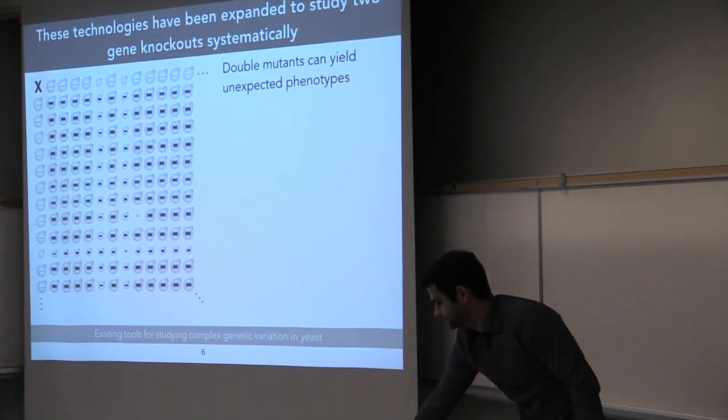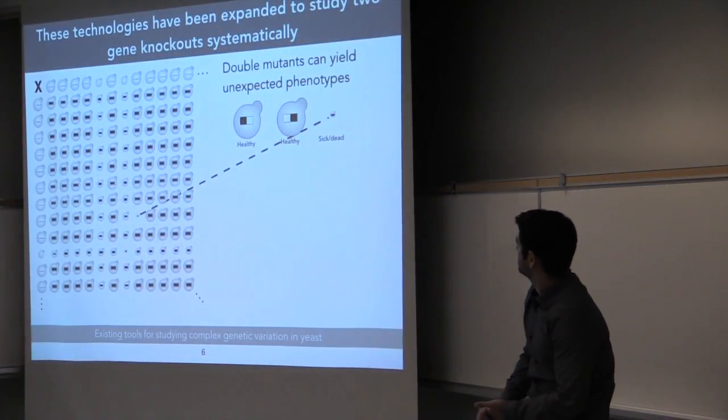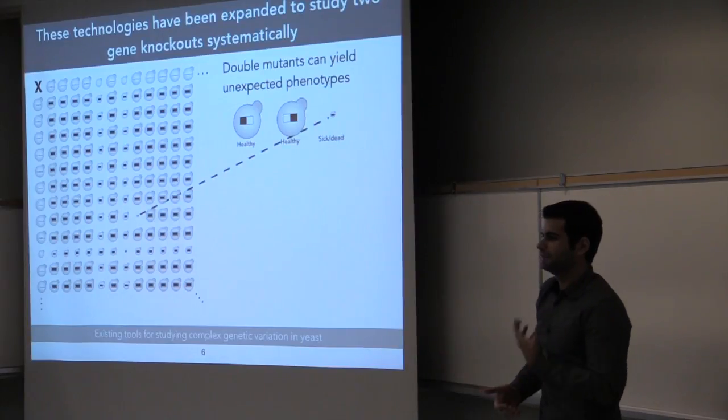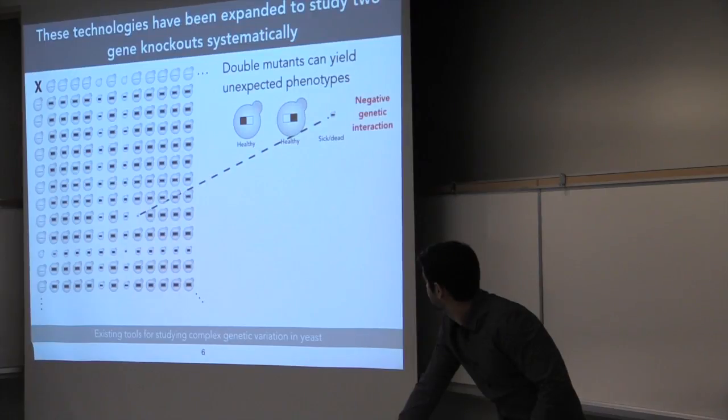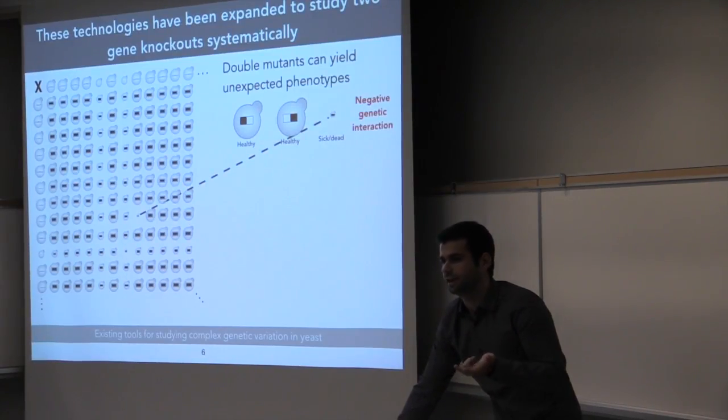So you have, for example, two knockouts, each of which do almost nothing to the cell, but once combined in the same cell to make it either sick or dead. This would be called an example of a negative genetic interaction.